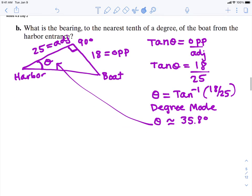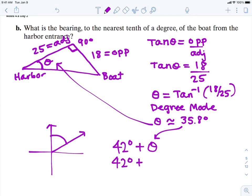So let's add those up. So the direction that that boat is going, the two of them, is you're going to take your 42 degrees plus your angle theta, which is 77.8 degrees.